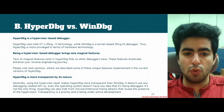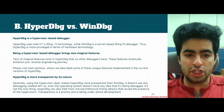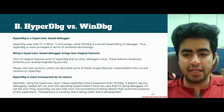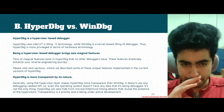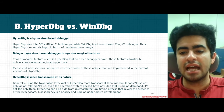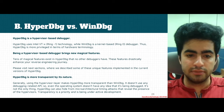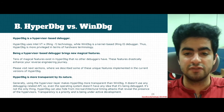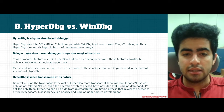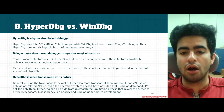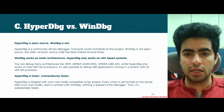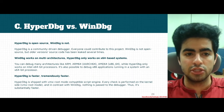HyperDBG is more transparent by its nature. Running at the hypervisor level makes HyperDBG more transparent than WinDBG. HyperDBG doesn't use any debugging-related APIs, so even the operating system itself has no idea it's being debugged. Additionally, HyperDBG tries to hide itself from microarchitectural timing attacks that reveal the presence of a hypervisor. Transparency is always a priority for HyperDBG and is under active development.